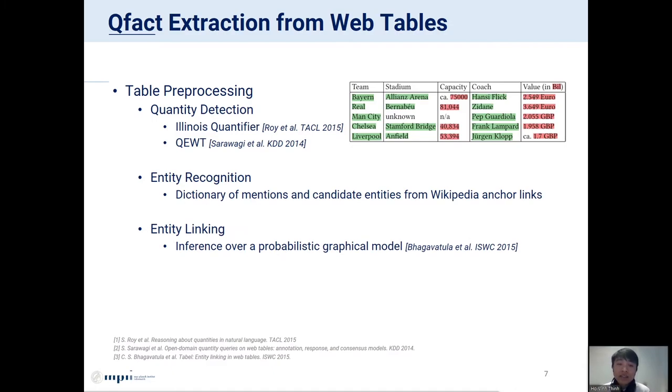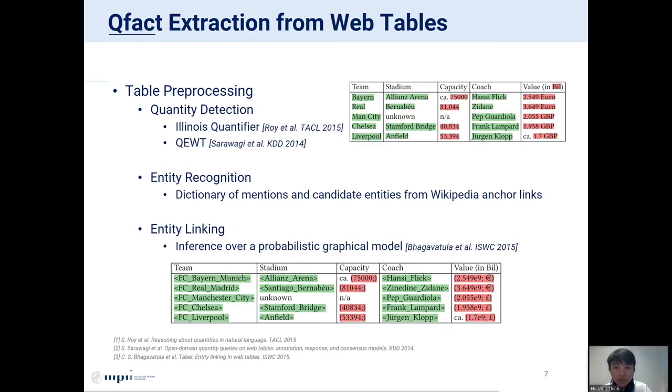The final step is entity linking, which links each mention to an entity in the candidate set. For this, we adopt a method from prior work with inference over a probabilistic graphical model. This is the output of this preprocessing phase. You can see that entities are recognized and linked to a KB, and quantities are extracted with proper value and unit.